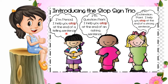Next we have a question mark. I am a question mark — I help you at the end of an asking sentence. An asking sentence is the type of sentence when we ask a question and get an answer. So, asking sentence is a question sentence. At the end of an asking sentence or question sentence, we use a question mark.